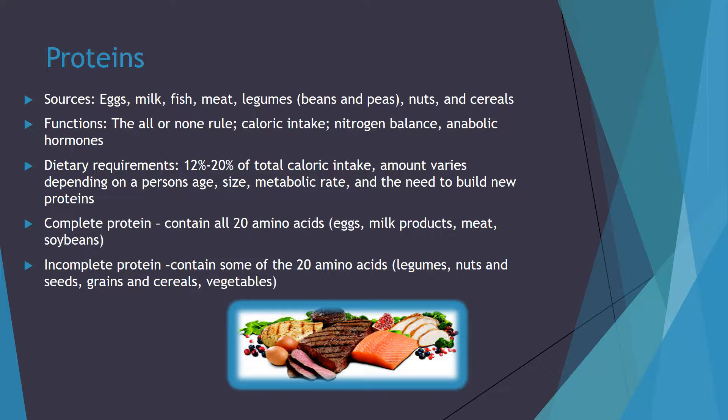Because essential amino acids cannot be stored, those not used immediately to build proteins are oxidized for energy or converted to carbohydrates or fats. The recommended dietary requirements are 12% to 20% of total caloric intake, but this amount varies depending on a person's age, size, metabolic rate, and the need to build new protein. A complete protein contains all 20 amino acids. Some examples are eggs, milk products, meat, and soybeans.